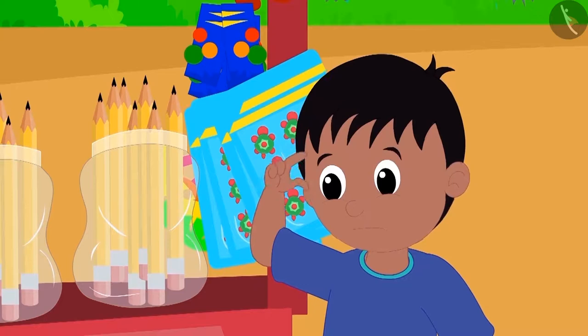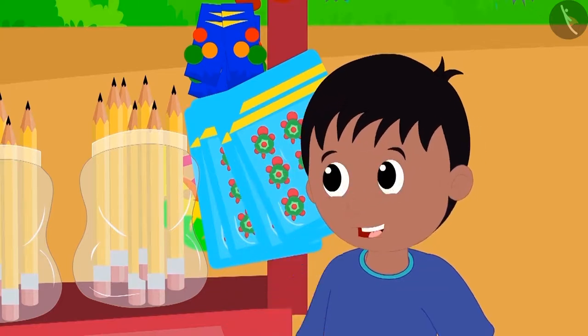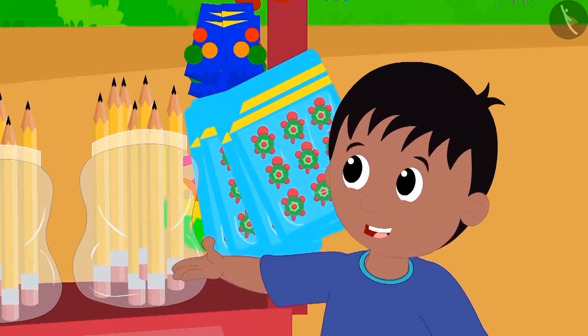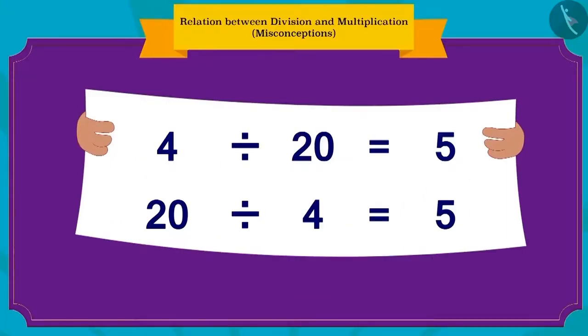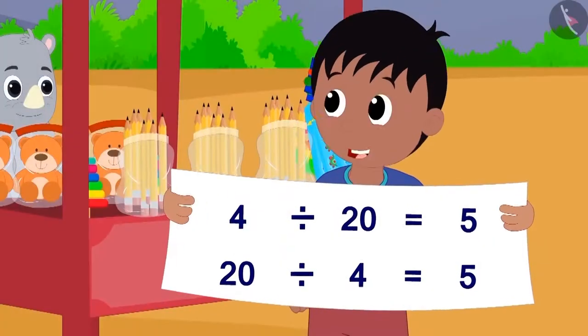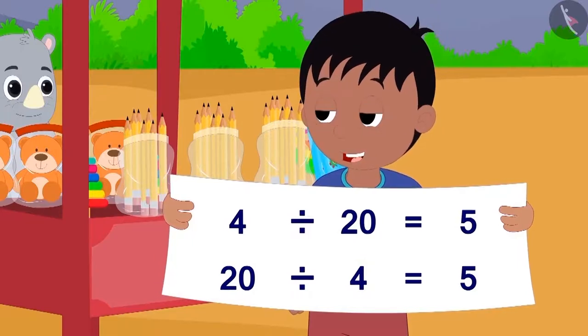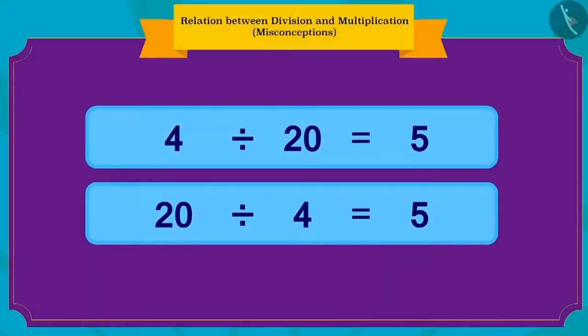Then Raju thought that he can also write division in two ways because of the relation between division and multiplication. Therefore, after writing division like this, he happily told Bablu that he had become an expert in maths. Children, is the division written by Raju correct?